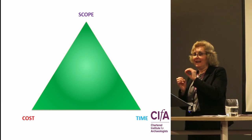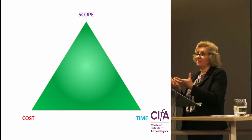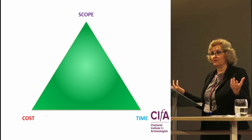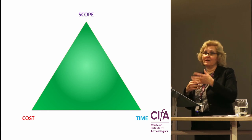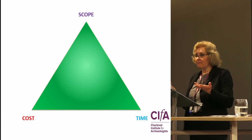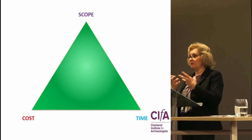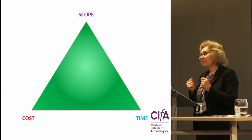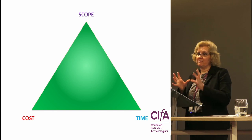The only thing you can do is alter the cost, the amount of resources you're putting in, or reduce the scope — the amount of work you're doing. For example, you might say we're not going to have that poster, or we're going to reduce the number of posters. That's the traditional way of looking at a project, concentrating on the inputs.